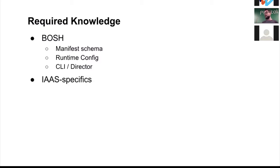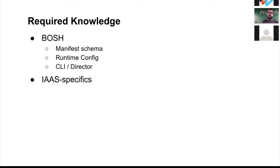There's more — you have to know about IaaS specifics. For example, you have to know what subnet IDs you're using, network-related stuff. You have to know VM types and what they're called in each IaaS. AWS calls VM types differently from GCP, for example.